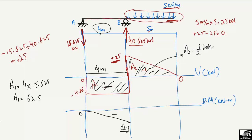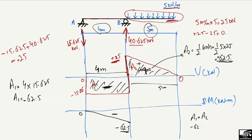The area A2 is a triangle, so the area equals half base times height: half of 5 meters times 25, which also gives 62.5. Since this was a positive shear force region, A2 is plus 62.5 kilonewton-meter. Adding A1 plus A2: minus 62.5 plus 62.5 equals zero. So the bending moment returns to zero at the free end, which is correct for an overhanging beam free end. This completes the bending moment diagram.